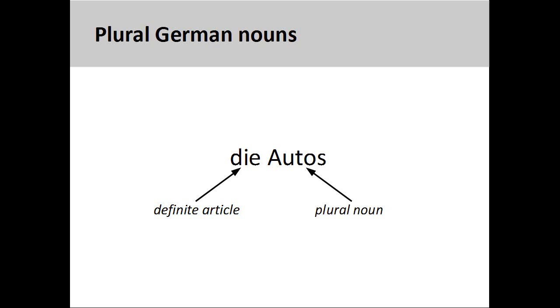The German noun 'Autos,' meaning 'cars,' is plural, so its definite article is 'die.' It is important to distinguish the plural definite article 'die' from the feminine singular article 'die.'